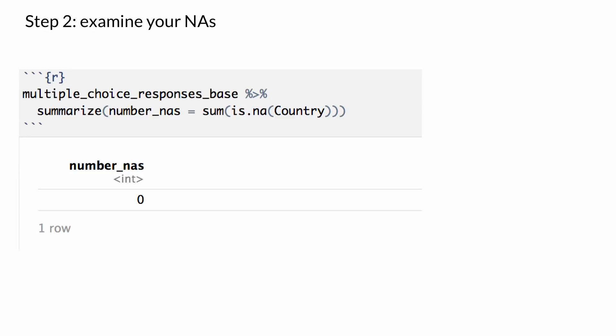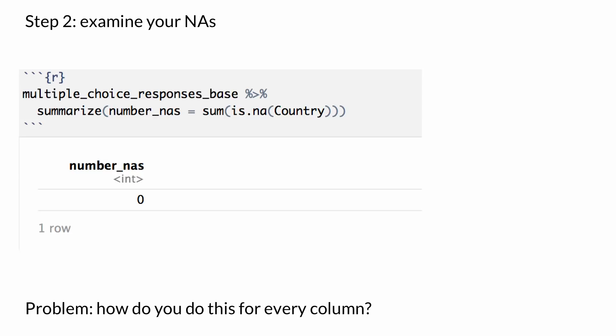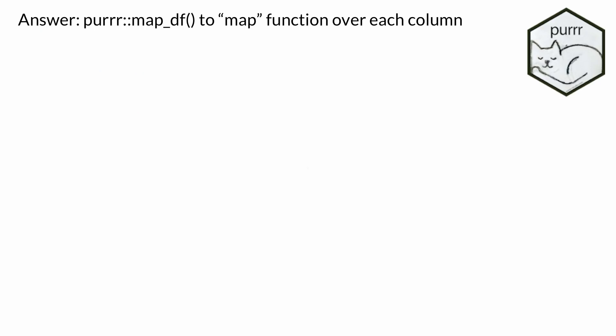Next up, examine your NAs. As we heard in an earlier talk, missing values can be really important. One way you can do it is using the combination of sum and is.na. is.na will change the variable to true or false depending on whether it's missing; then we sum it — because true evaluates to one and false to zero — and that gets us the number of NAs. Using dplyr's summarize, we get a one-row data set showing the number of NAs. But how can we do this for every column without running through each column name individually?